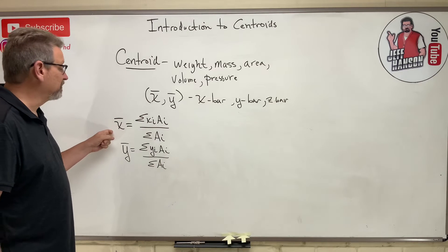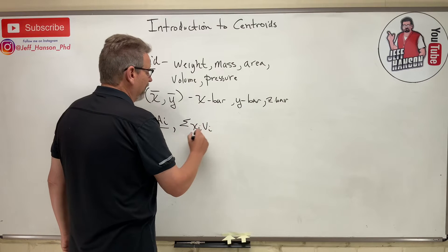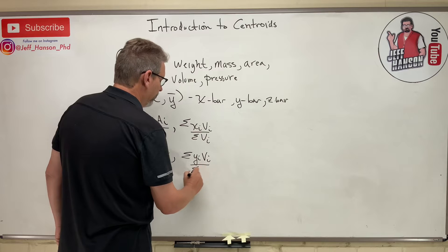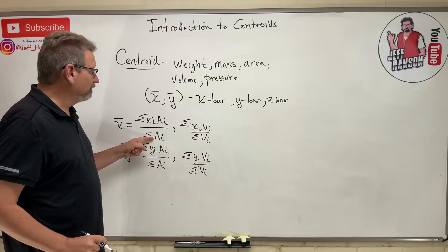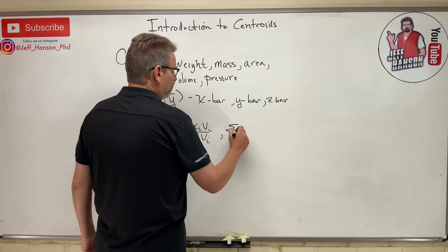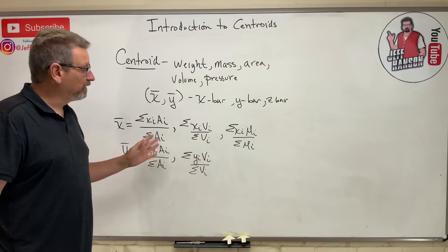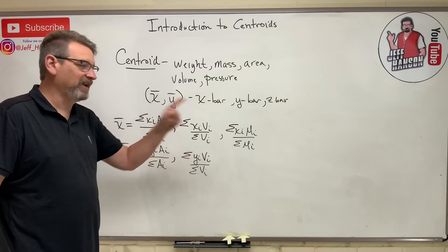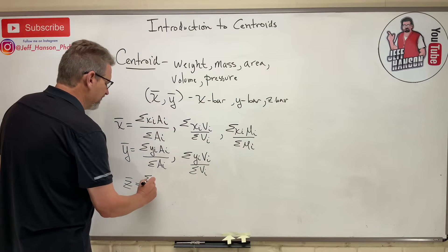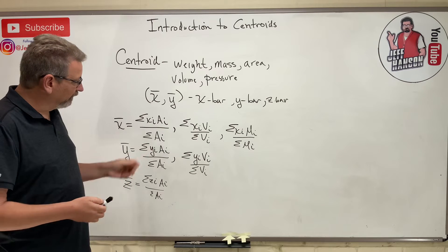The nice thing about this equation is we can substitute many things into it. Instead of area A, you could use volume V for center of volume, mass M for center of mass, pressure P, or weight W. The equation works exactly the same way. And z-bar equals the sum of z-sub-i times A-sub-i divided by the sum of A-sub-i. This is the central equation for this chapter.